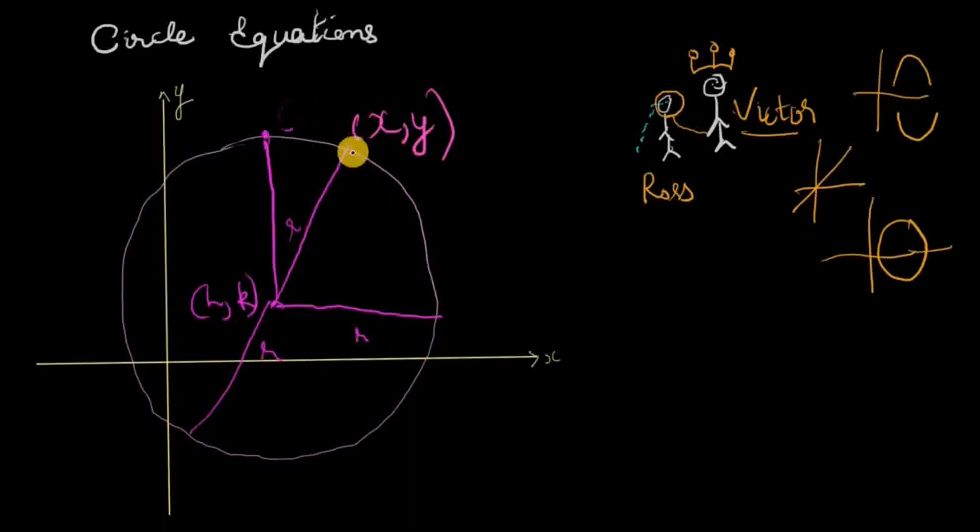Ross figured out to draw a vertical line here - that was the vertical distance between the y-coordinates of these two points. Here is y, and here is k. So the vertical distance between these two points would be y minus k, because this is y and this is k.